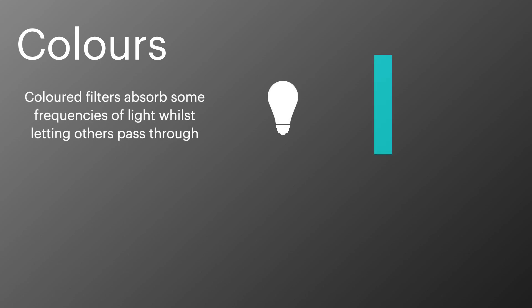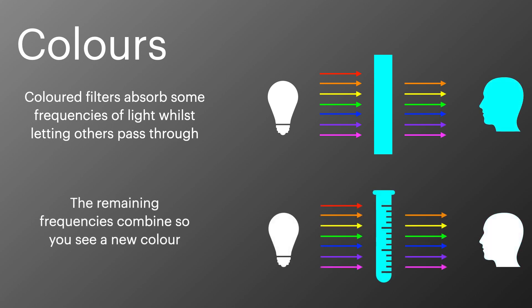Before we look at why transition metals form colored solutions, it will first help us to look at how colored filters work. Colored filters absorb certain frequencies of light, allowing others to pass through. These remaining frequencies combine to form the color that we see. We're now going to look at how transition metal complexes go about absorbing different frequencies of light and why they appear to be different colors.